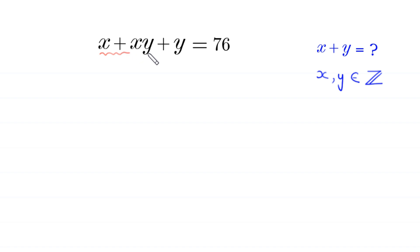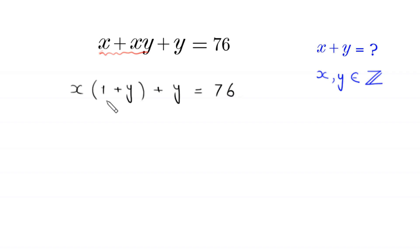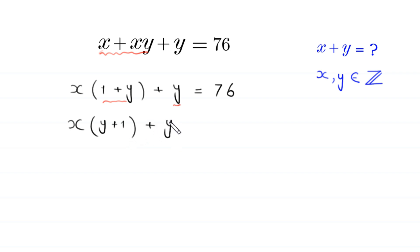From these two terms, x plus xy, we can factor out x as a common factor, leaving x times (1 plus y), plus y, equals 76. Now because we have 1 plus y, to make this y match (1 plus y), we add 1 to both sides of the equation: x times (y plus 1) plus y plus 1 equals 77.